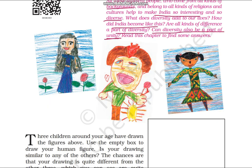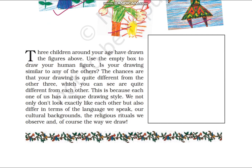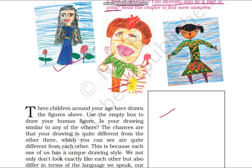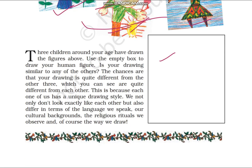Right, now look at these drawings. Yeh jo drawings hain, yeh ek hi age ke bachon ne banayi hain. And you can easily notice that these all three drawings are different from each other. And you can also make your own drawing, your own human figure in this box — aap ki book mein hogi yeh box, to aap apna human figure is box mein bana sakti hain. And jab aap bana lenge, to you will notice ki jo aap ki drawing hai, wo in teeno se alag hai. In teeno ki jo drawing hai, wo bilkul alag hai — yeh aapas mein bhi alag hain. Aisa kyu hua? Yeh jitne bhi human figures humne banaaye hain — in bachon ne banaaye hain — wo sab alag-alag kyun hain? Kyunki hum sab ka ek unique drawing style hai. Everyone has their own unique drawing style. Hum log sirf dikhte hi alag nahi hain — hum mein aur bhi kaafi saare differences hain. Hum log sochte alag hain, hamaari pasand alag hai, hamaara drawing style alag hai.